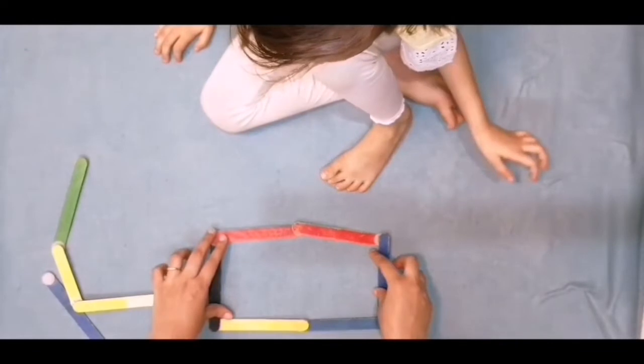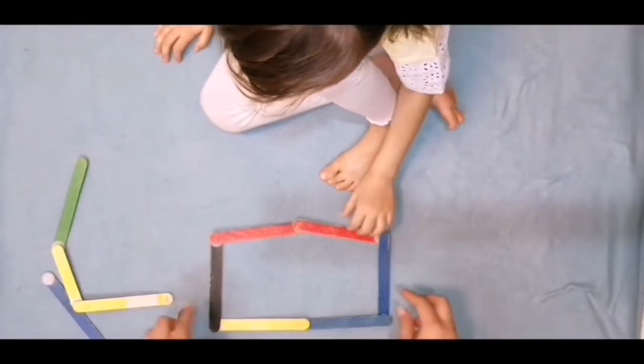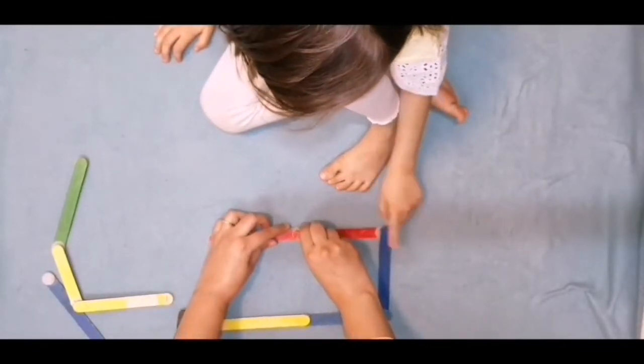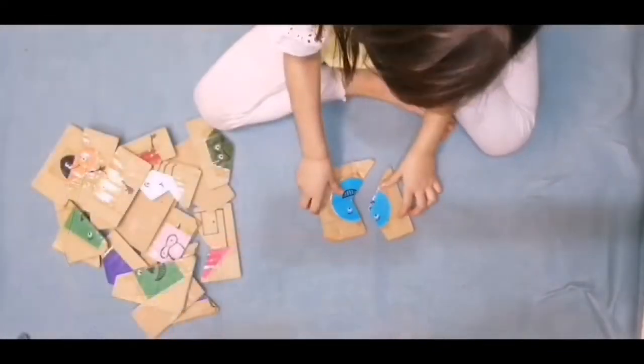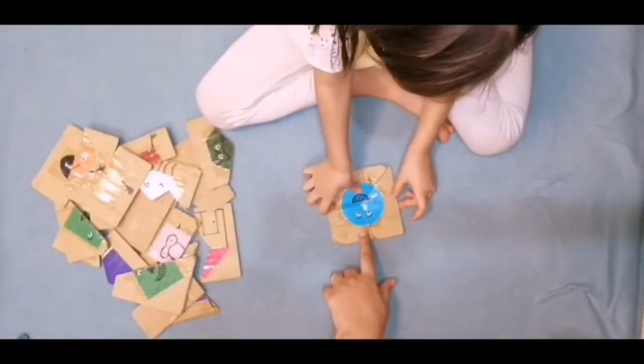Rectangle. Rectangle. How many corners for rectangle? One, two, three, four. Four corners.